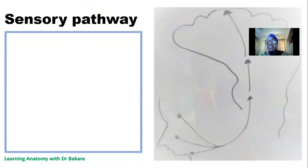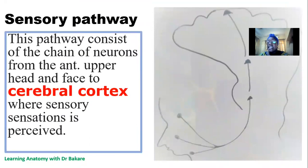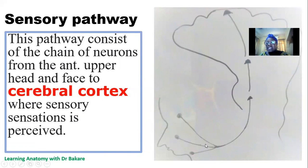The sensory pathway basically entails chains of neurons that are connected one after the other. They connect from the target site, which in this regard would be the face. Neurons around this region are connected in a chain network and they run upward to the cerebral hemisphere where the sensation is perceived.